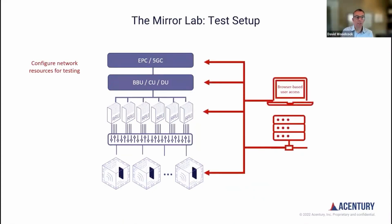To facilitate test automation, each resource in the system is controlled by the orchestration layer and configured according to the scenario being tested. Here we're showing the 5G core, higher levels of RAN, CU-DU splits, the RAUs, and the devices under test, but any equipment with an API can be included.